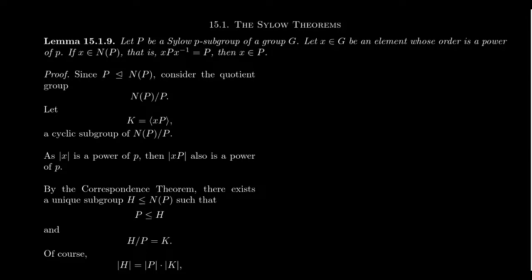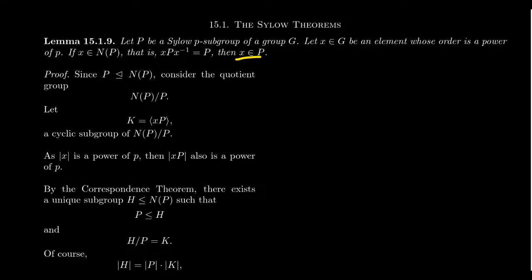Our first lemma is about a Sylow-P subgroup — a maximal P-subgroup of G. Suppose P is a Sylow-P subgroup and x is an element whose order is a power of P. If x belongs to the normalizer of P — the collection of elements where xPx⁻¹ = P — then x actually belongs to the Sylow-P subgroup itself. So if a P-element normalizes a Sylow-P subgroup, it belongs to that subgroup.